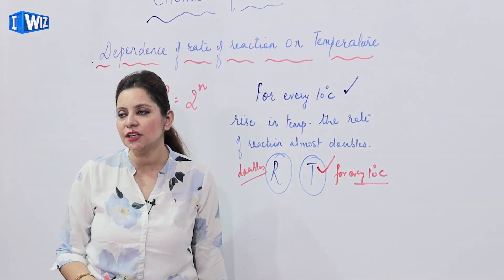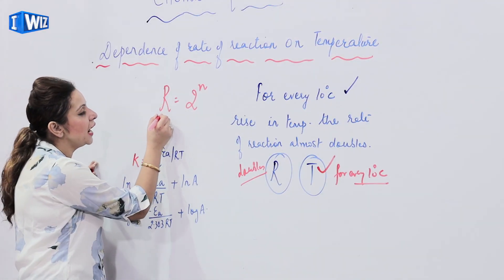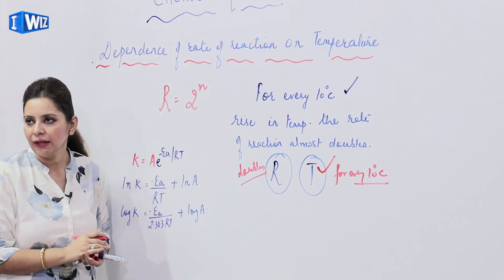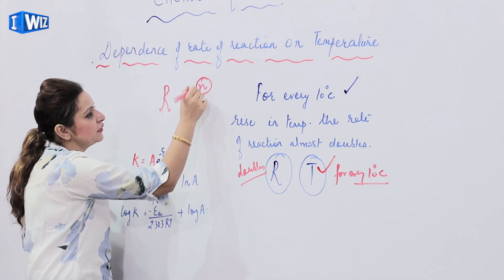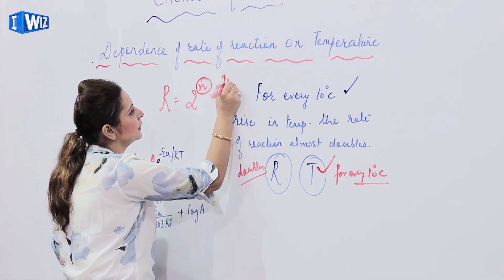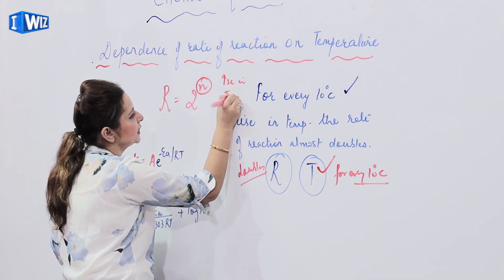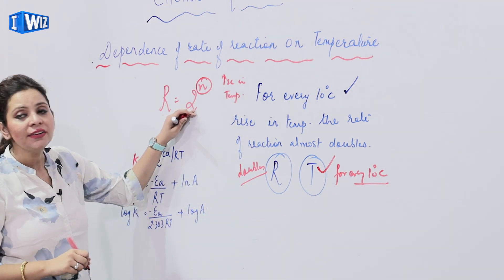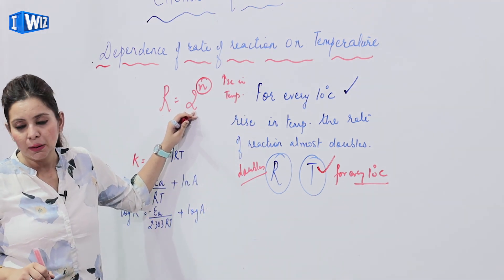We can relate rate with temperature by the formula R is equal to 2 raise to power n, where n specifies the increase in temperature. The n specifies the increase in temperature and 2 we have taken because we know the rate almost doubles.